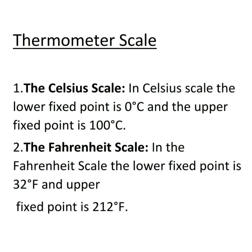Next is the Fahrenheit scale. In the Fahrenheit scale, the lower fixed point is 32 degree Fahrenheit and the upper fixed point is 212 degree Fahrenheit. The interval between these two points is divided into 180 equal parts.